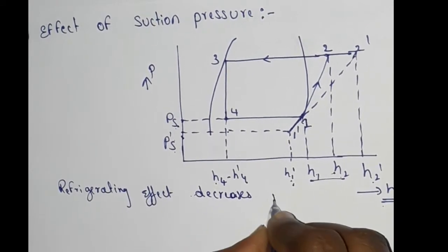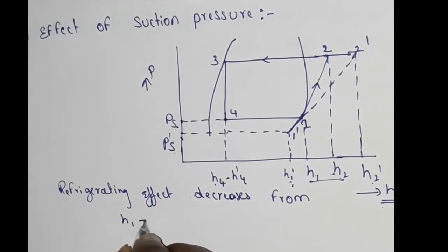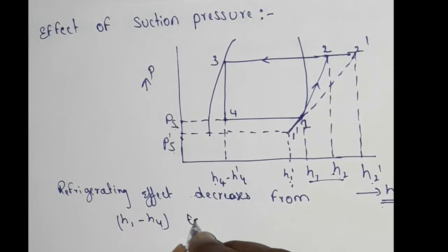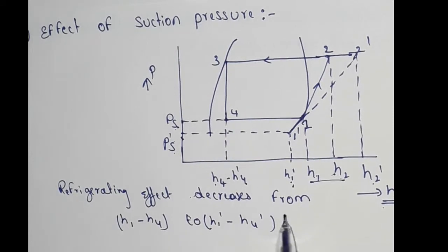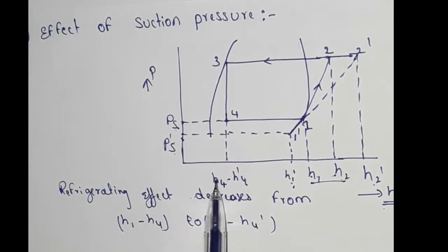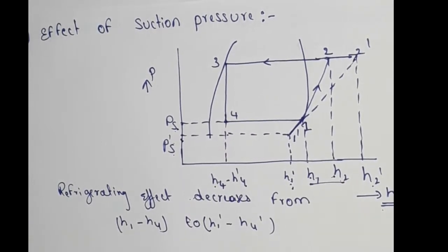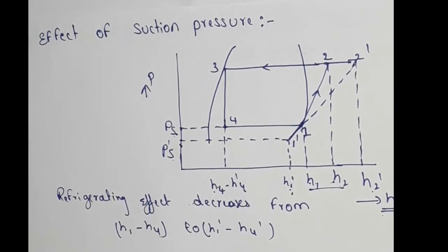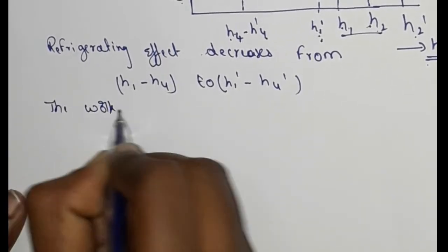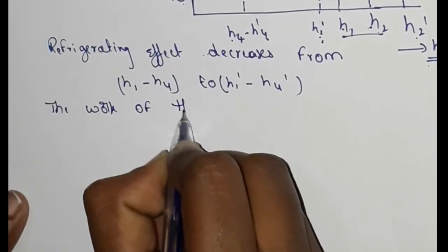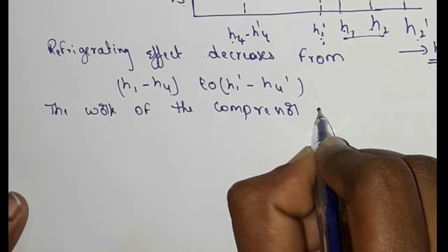Here, the refrigerating effect decreases from H1 minus H4 to H1-dash minus H4-dash — that is, the refrigerating effect is reduced. The work of the compressor is also increased.